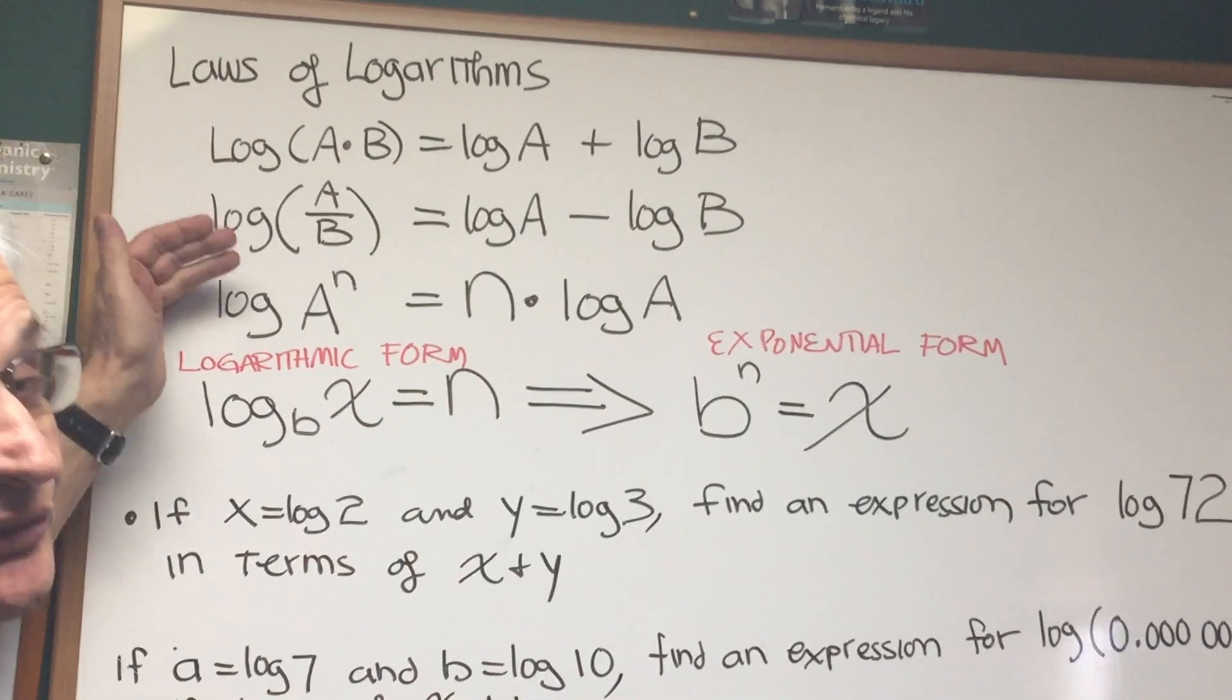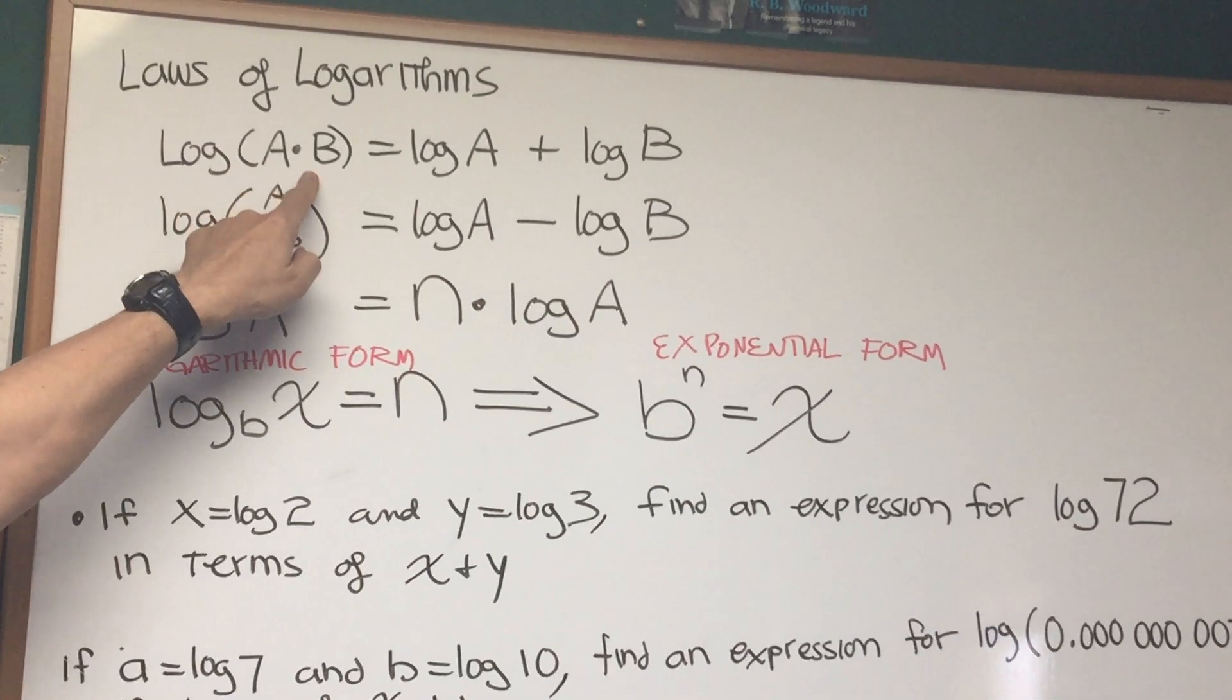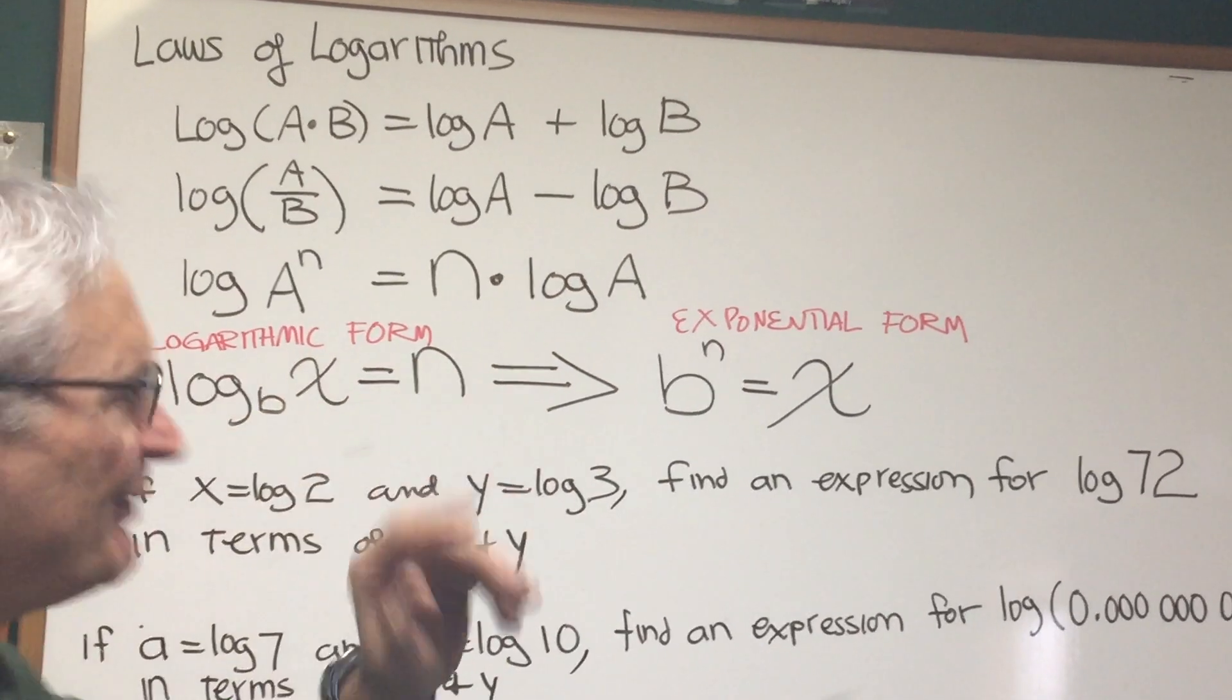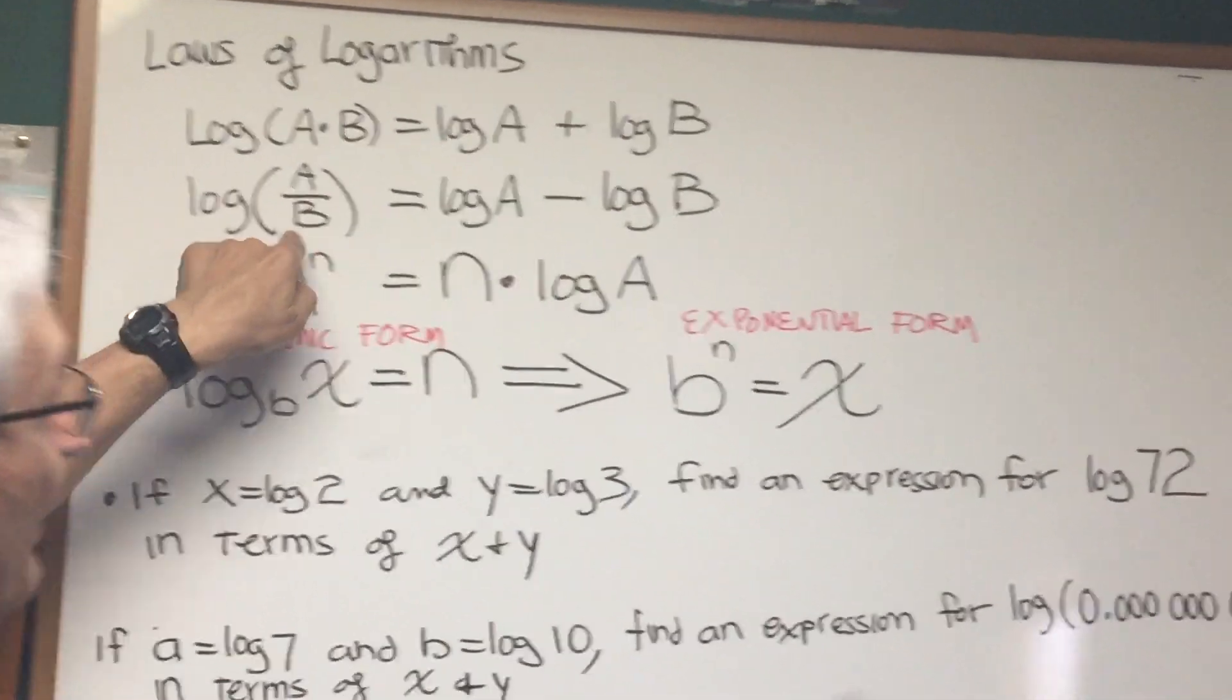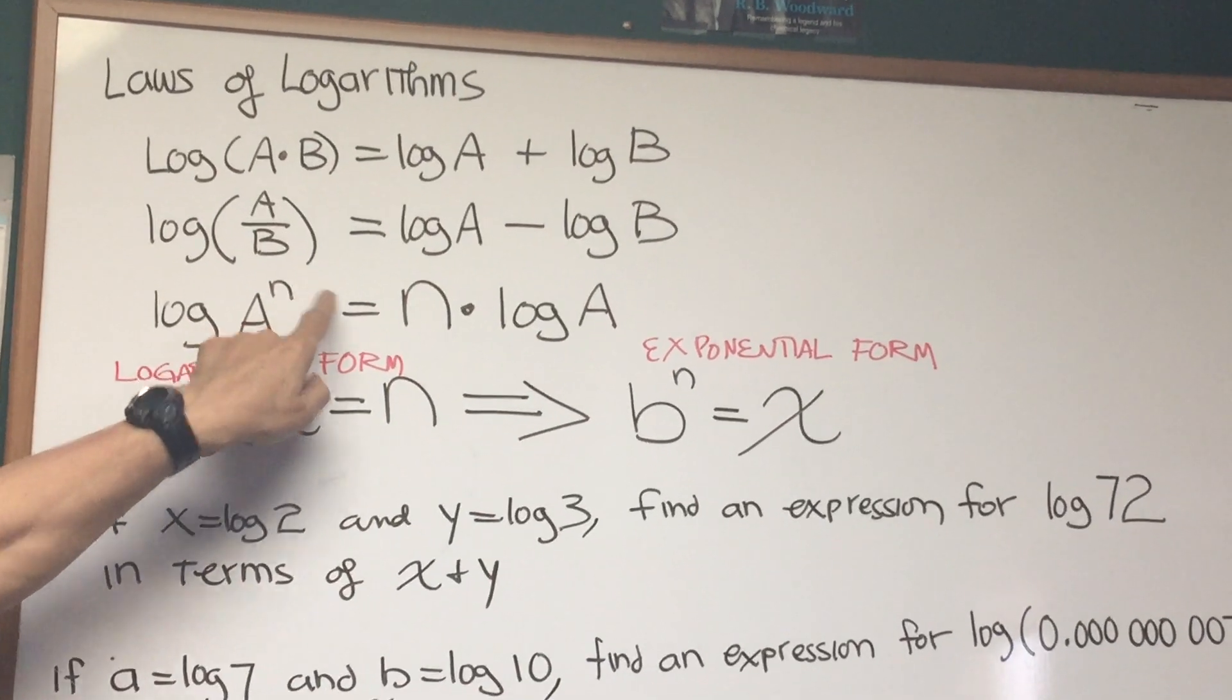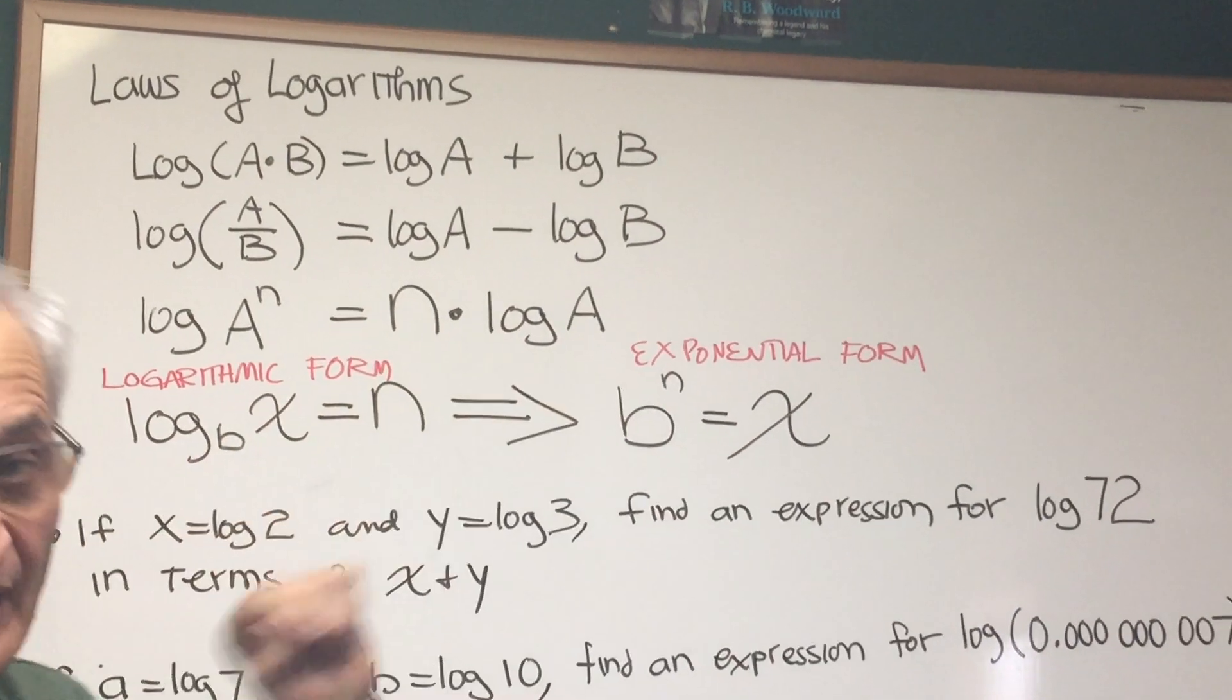Here are the basic laws of logarithms that you should get familiar with and internalize. Log of a times b is equal to log of a plus log of b. I'm sure you've seen these before. Log of a divided by b is log of a minus log of b. Log of a to the nth power, the n can be brought down as a coefficient, is equal to n times log of a.